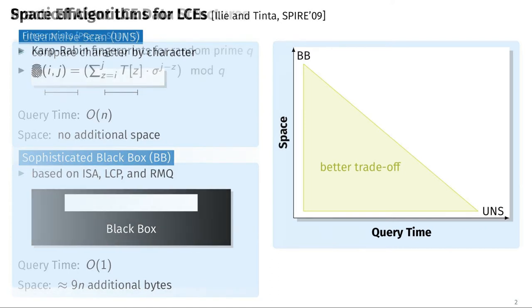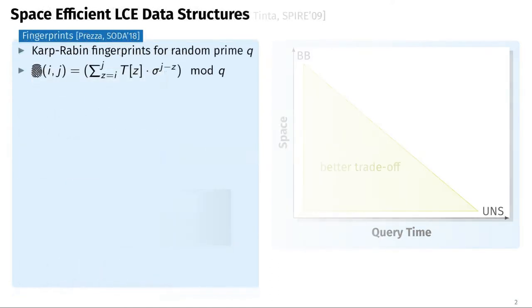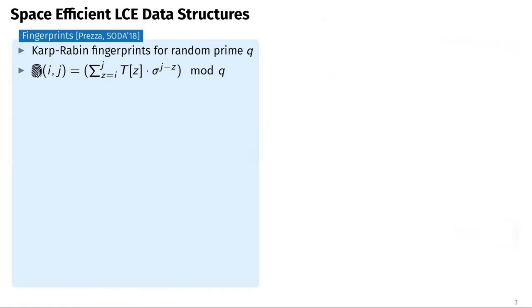In the following, we will look at two data structures that have a better space-query-time trade-off. Both approaches have significantly better space requirements than the black box approach but can also be faster than the naive scan approach when answering longest common extension queries.